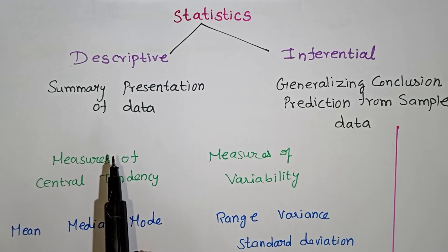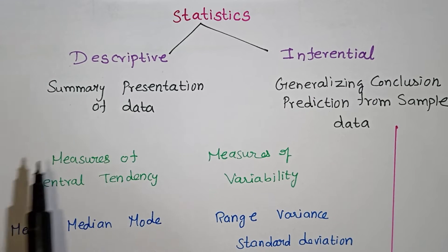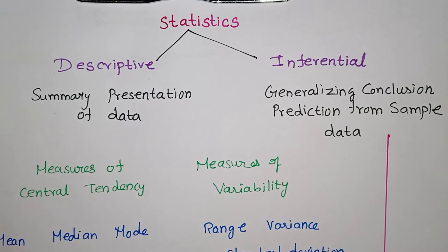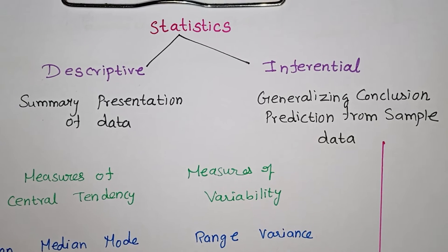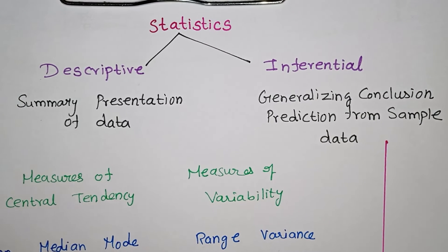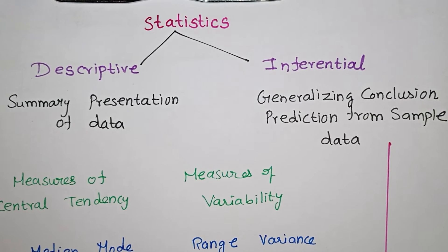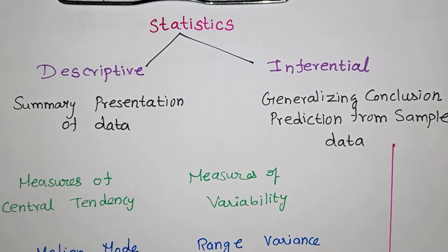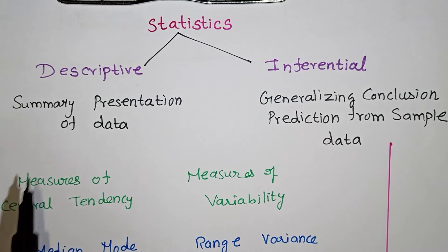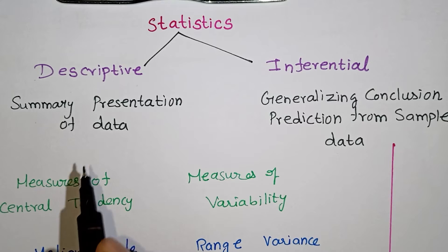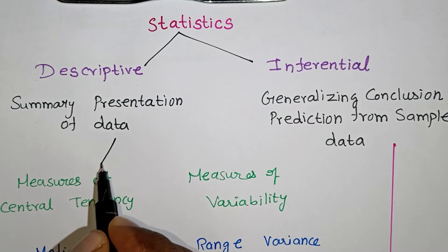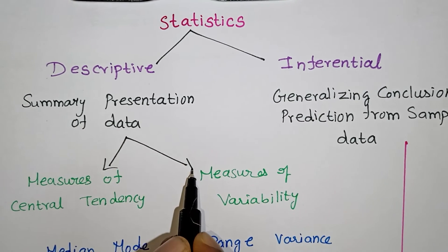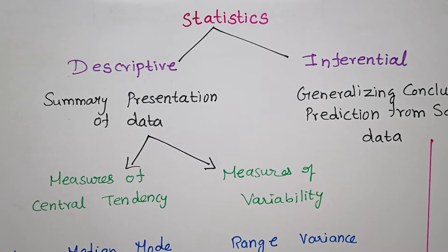Descriptive statistics provide a summary presentation of the data — stating the facts or proven outcomes of a population. Full population study results are descriptive. The two types are measures of central tendency and measures of variability.